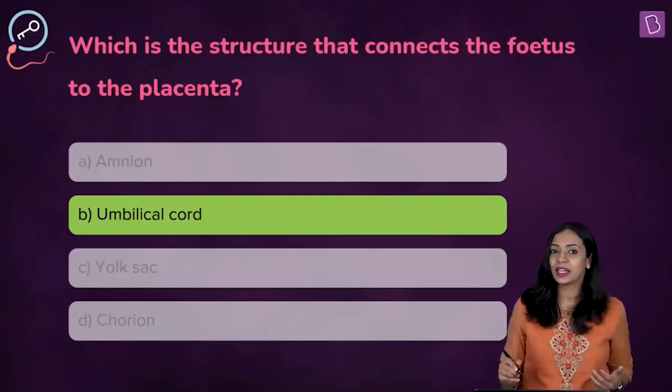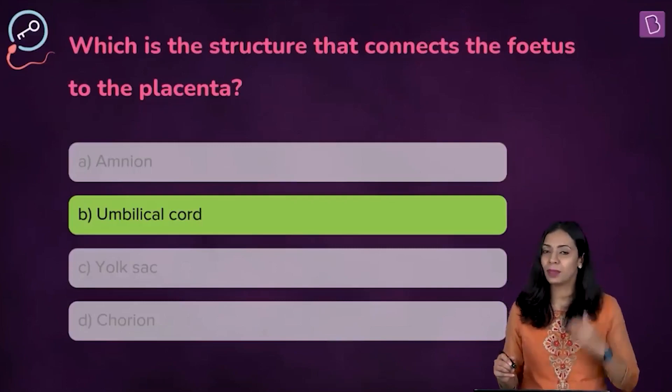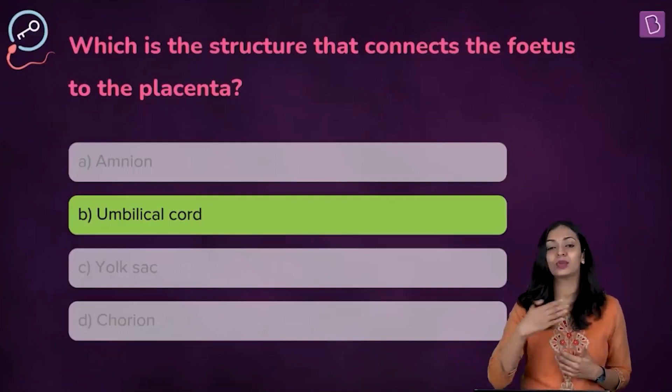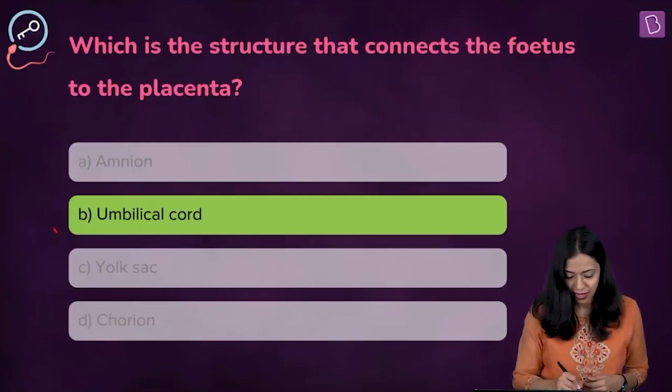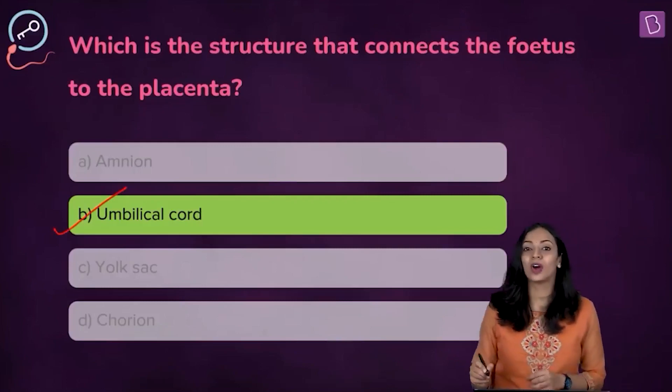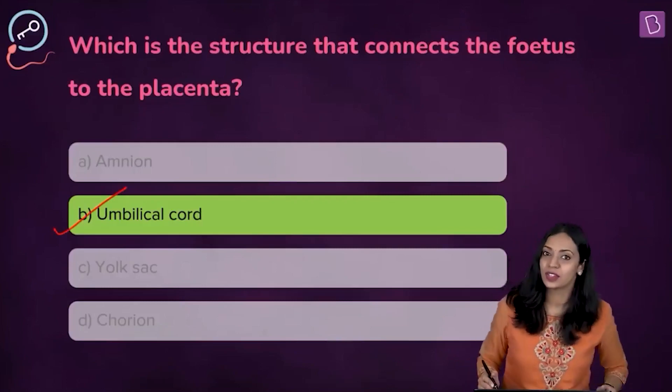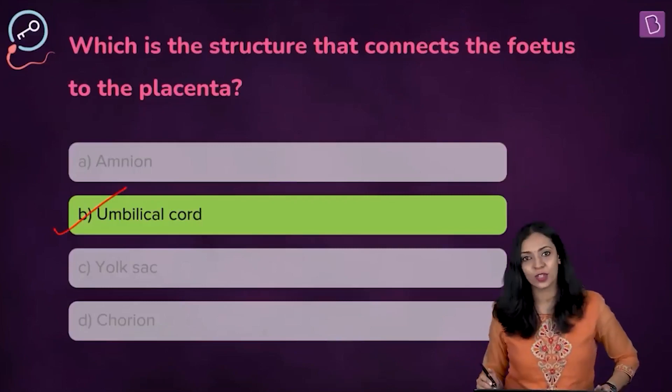The structure that connects the placenta to the developing fetus is known as the umbilical cord. So the correct answer to this question is option B.